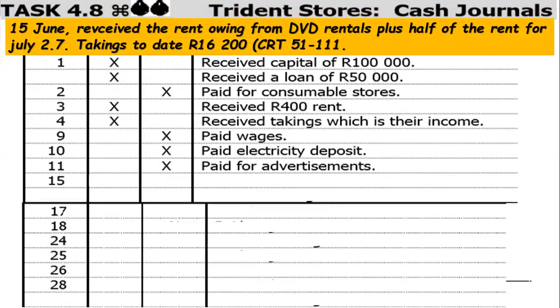On the 15th of June, they received the rent owing from DVD Rentals plus half the rent for July, making a total of 800 rands — that's money received. On the same date, takings to date amounted to 16,200 rands — also receipts, so Cash Receipt Journal entries.